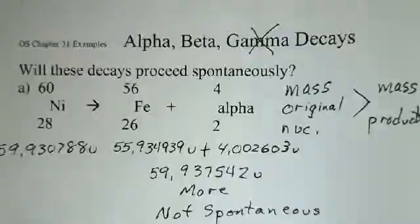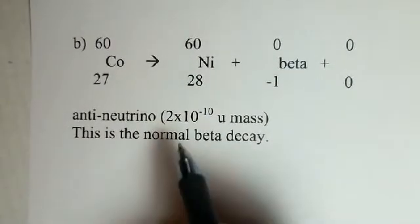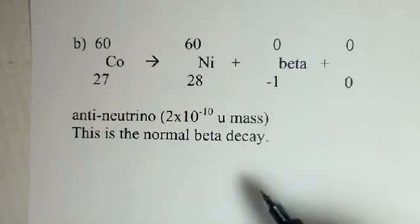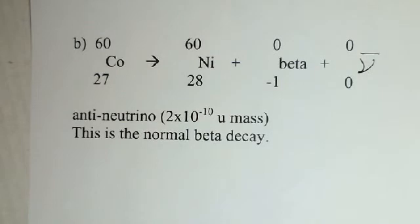So let's go to the next one, a beta decay. And this one we have cobalt-60 becoming nickel-60, and then the beta coming off here. And the page is a little bit incomplete. Anti-neutrino in this normal beta decay.